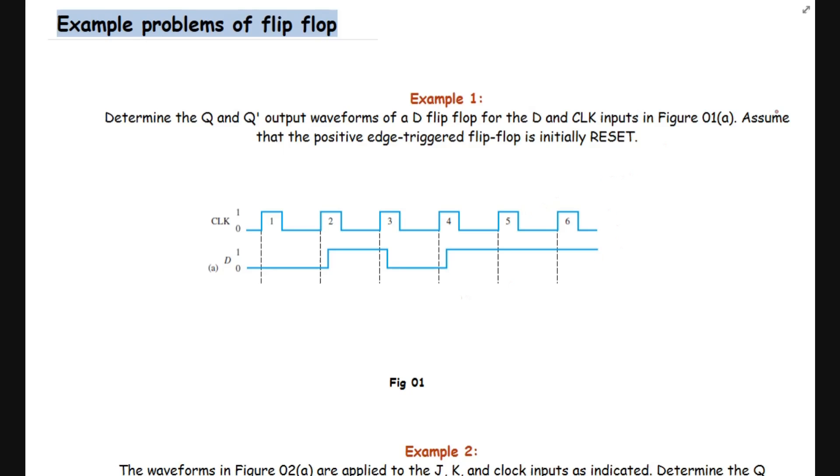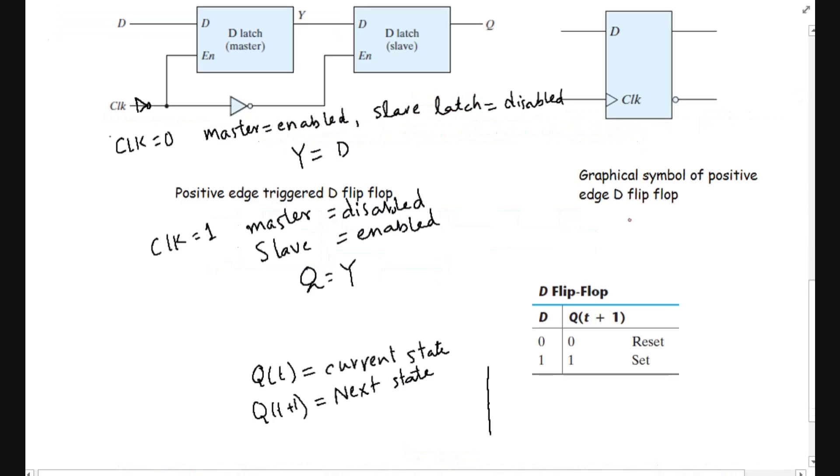Let me review the D flip-flop that we covered in the last lecture. For D flip-flop, this is an example with positive edge triggering. We can see that if the data is 0, the output is 0. If the data is 1, the output will be 1.